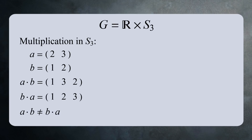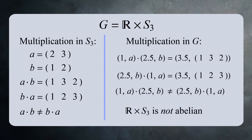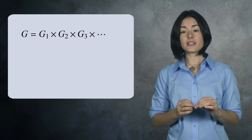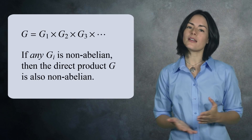This non-commutativity carries over to the direct product. For example, if we combine (1, A) and (2.5, B), we get (3.5, (1,3,2)). But if we reverse it and compute the product of (2.5, B) and (1, A), we get (3.5, (1,2,3)). So the direct product ℝ × S3 is not an abelian group. This highlights an important point: if you take the direct product of several groups, and any one of them is non-abelian, then the direct product is non-abelian too.